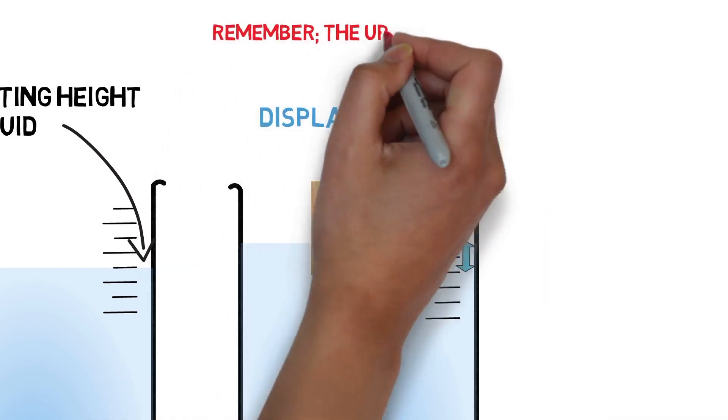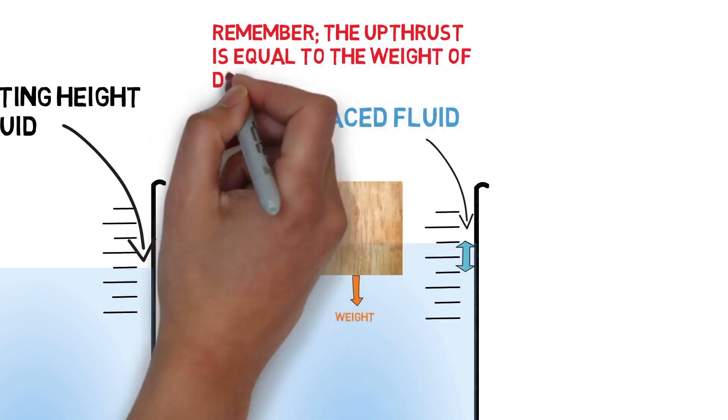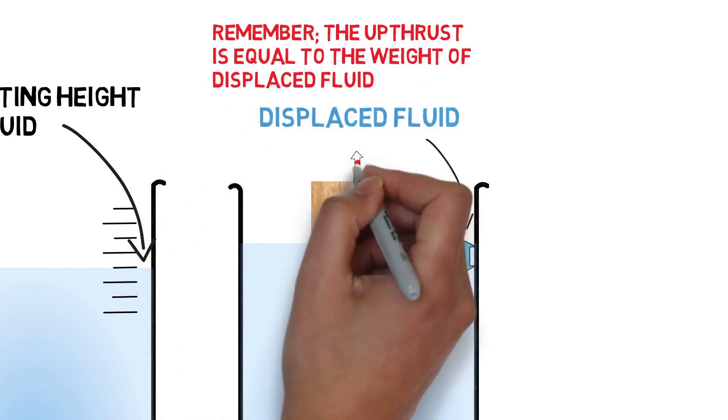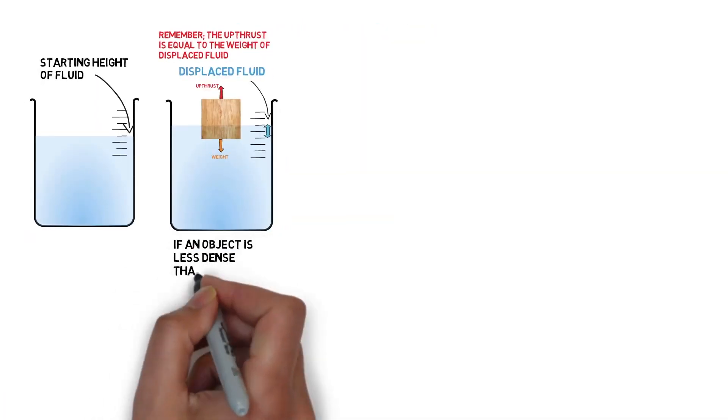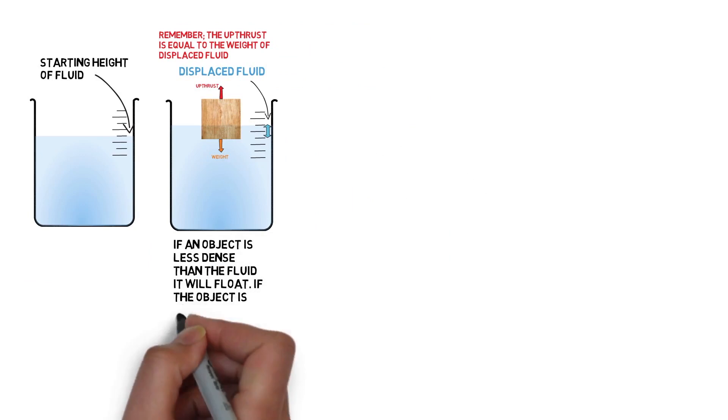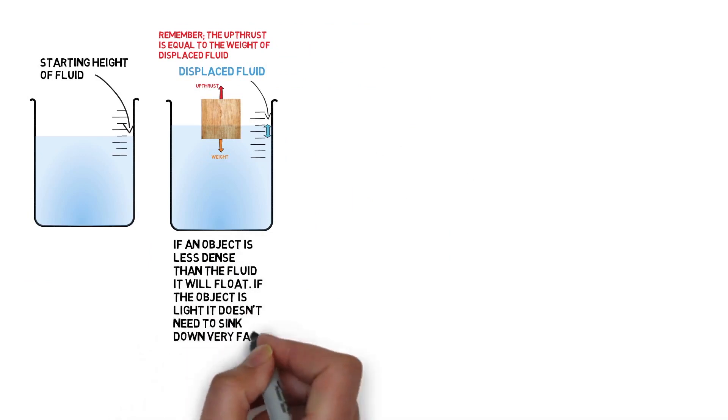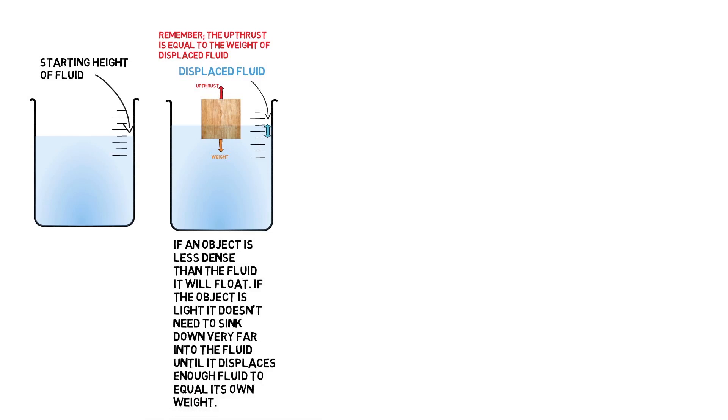Remember, the upthrust is equal to the weight of displaced fluid. If an object is less dense than the fluid, it will float. If the object is light, it doesn't need to sink down very far into the fluid until it displaces enough fluid to equal its own weight.